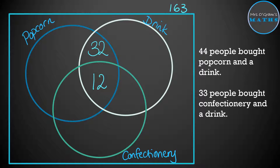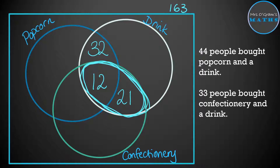We've got 33 people that bought confectionery and a drink, so we're looking at where those circles overlap — that total has to add up to 33. The part left for drink and confectionery but not popcorn is 21.